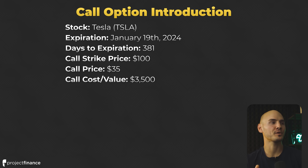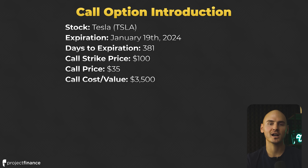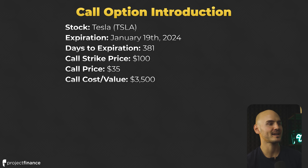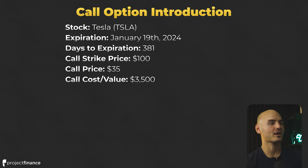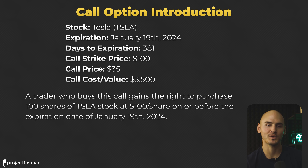Now let's go through a Tesla call option example with all the specific details. The stock is Tesla. The expiration for this particular trade is January 19th, 2024, and the amount of days until expiration when this trade was entered is 381 days — referred to as DTE, or days to expiration. The call strike price is $100 and the call price at the beginning of the period is $35. Knowing the contract multiplier of 100, we multiply this price by 100 to get the call's actual cost of $3,500. So a trader who buys this call option gains the right to purchase 100 shares of Tesla stock at $100 per share on or before January 19th, 2024, for a cost of $3,500.